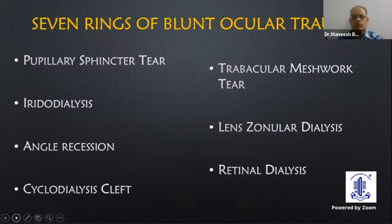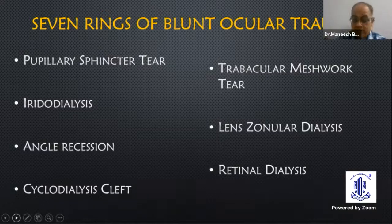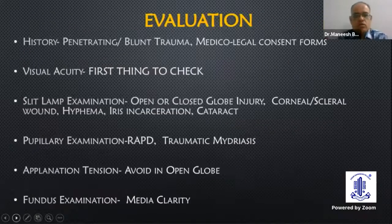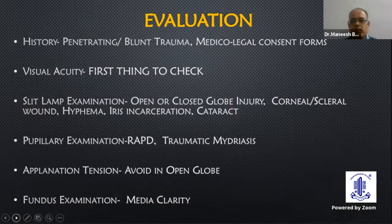The more common trauma is blunt ocular trauma. The easy way to remember the seven rings of blunt ocular trauma, which gives us a clue when we are assessing these patients: pupillary sphincter tear, iridodialysis, angular recession, cyclo-dialysis cleft, trabecular meshwork tear, lens zonule dialysis, and retinal dialysis. When we are evaluating these patients, we have to take a detailed history - whether it is penetrating or blunt trauma.